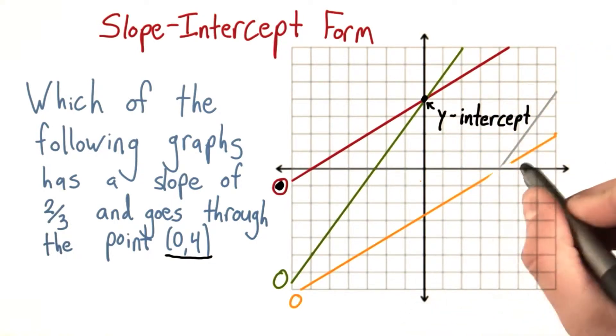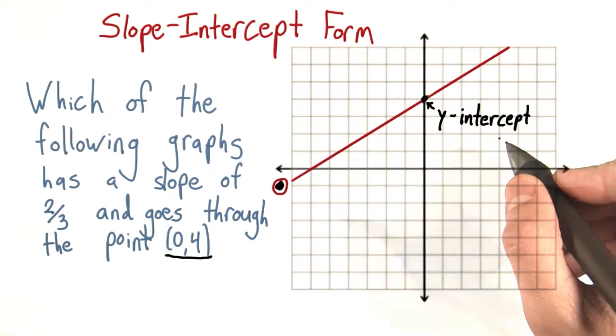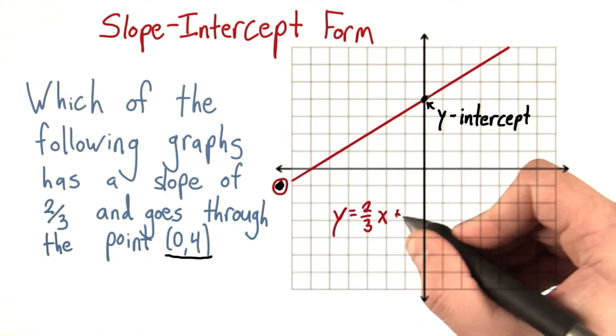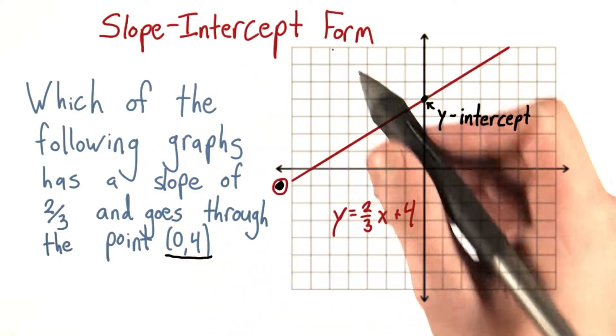Let's ignore these other lines and let's write the actual equation of this line. And it turns out that the equation is y equals 2 thirds x plus 4. And this is one example of the slope-intercept form of the equation of a line,